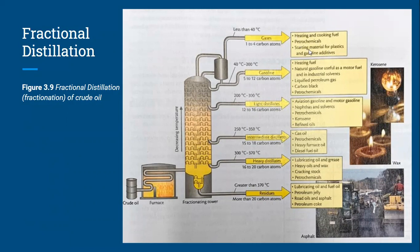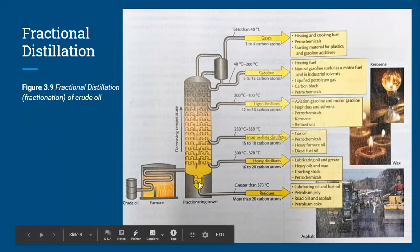The top fractions are used for heating and cooking fuel, petrochemicals, and starting materials for plastics and gasoline additives. As we move down, the carbon chains get longer and the uses change. All the way at the bottom, we have the part of the crude oil that doesn't even boil — we call these the residues. These typically have more than 20 carbon atoms and boil at temperatures greater than 370 degrees Celsius. This fraction is used for petroleum jelly, asphalt, road oils, lubricants, or fuel oil. They're very thick.